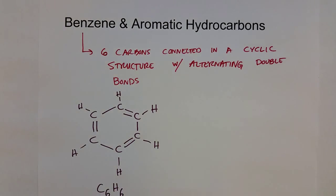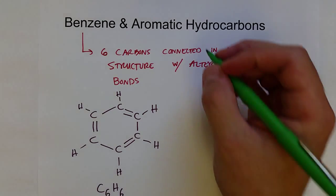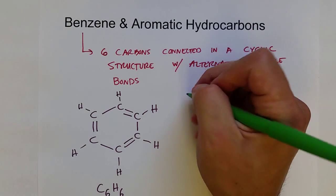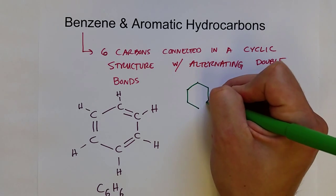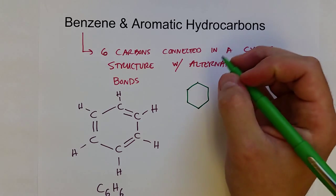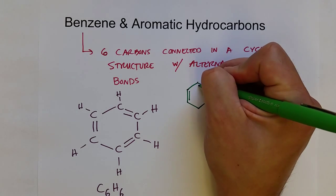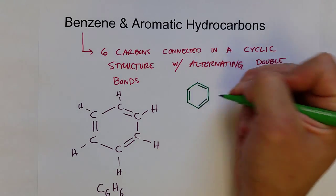Of course, we could draw the skeletal form of this structure, and it would look like this. First we would draw the ring structure, and then we would put double bonds. Every other bond is a double bond.